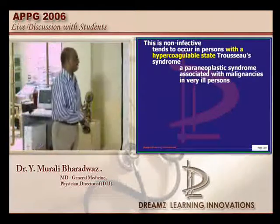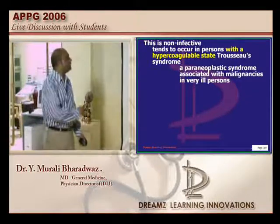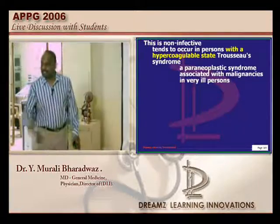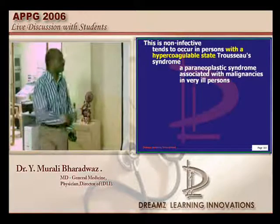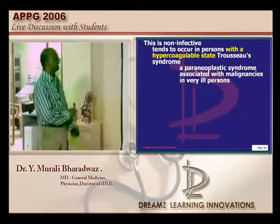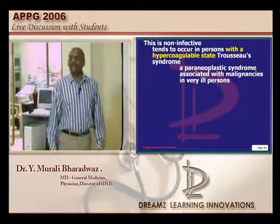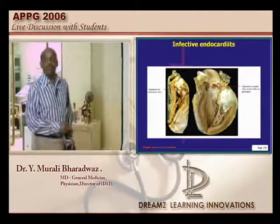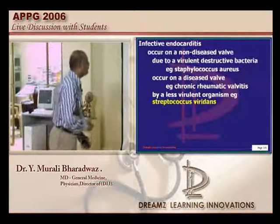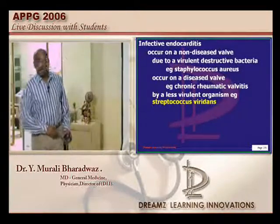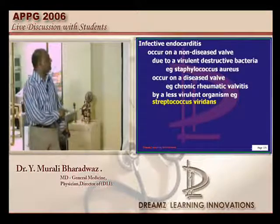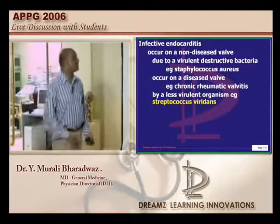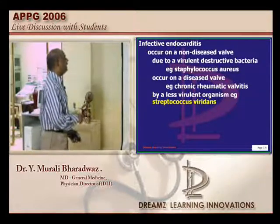It is not associated with any valve damage, unlike Libman-Sacks endocarditis. Now what predisposes to marantic endocarditis? Any hypercoagulable state, if there is any underlying malignancy like Trousseau syndrome, very ill patients can develop marantic endocarditis. Lastly comes infective endocarditis, typically caused by virulent destructive organisms like Staph aureus in a non-diseased valve, or if it is a diseased valve because of rheumatic heart disease, it can be caused by a less virulent organism like Streptococcus viridans.